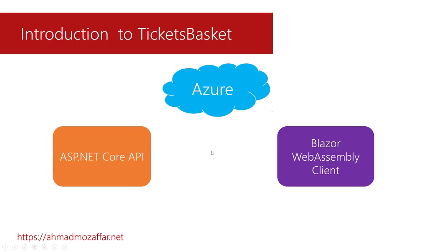Let's talk a little bit about the project we are going to build in this course. The project is going to be called Tickets Basket. Generally, you will have an ASP.NET Core API with a SQL Server database, Entity Framework Core, hosted on Azure using Azure services including Storage, SignalR, authentication, Active Directory, AI cognitive services, Azure Functions, and more. The client is going to be a Blazor WebAssembly client — a very modern app using all the modern technologies currently required in the market, developed from scratch all the way to deployment.